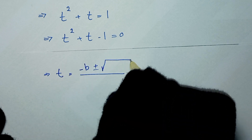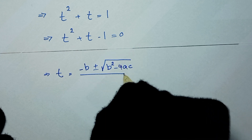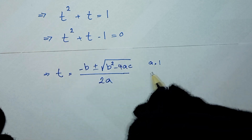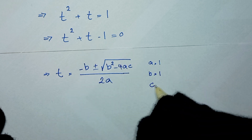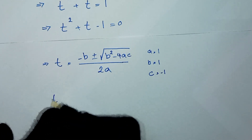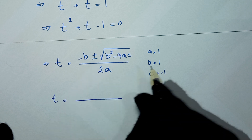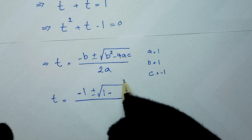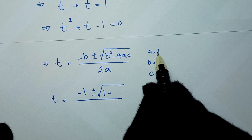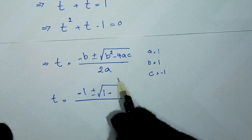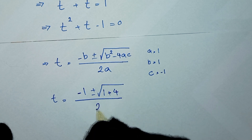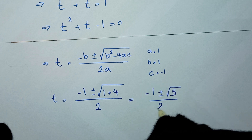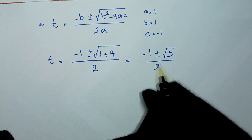We use the quadratic formula: t = (−b ± √(b² − 4ac)) / 2a. Here, a = 1 (coefficient of t²), b = 1 (coefficient of t), and c = −1 (constant). So t = (−1 ± √(1 − 4·1·(−1))) / 2, which gives t = (−1 ± √(1 + 4)) / 2, and 2a = 2. This equals (−1 ± √5) / 2.